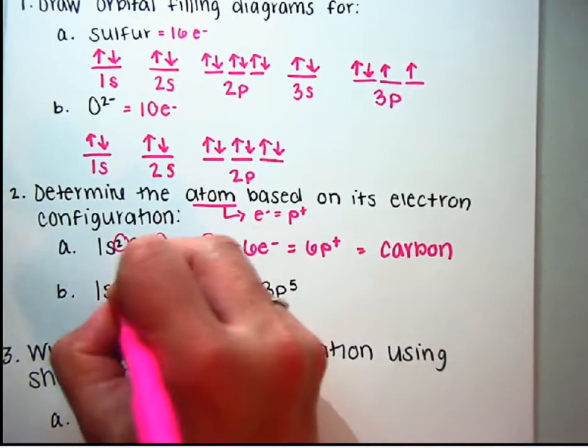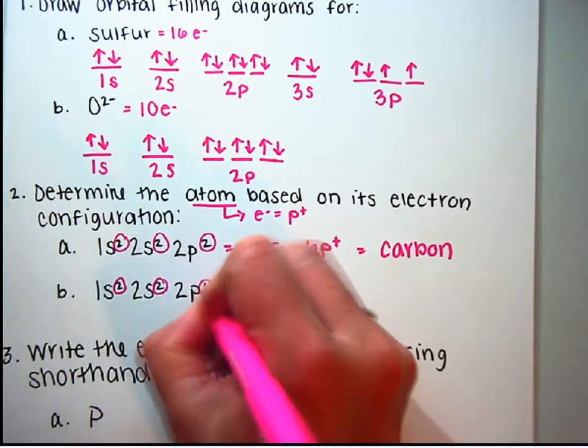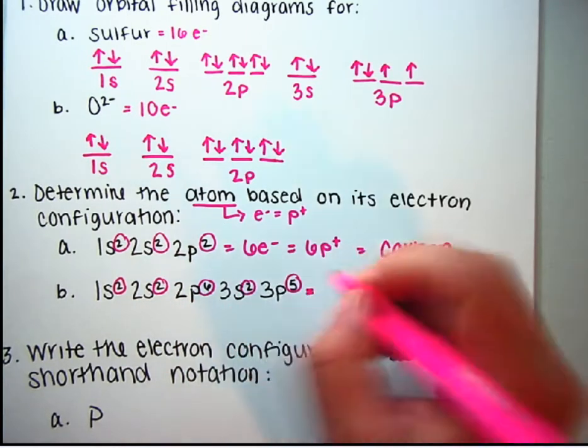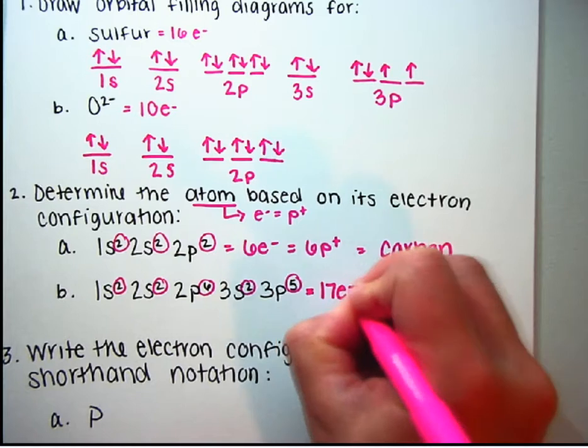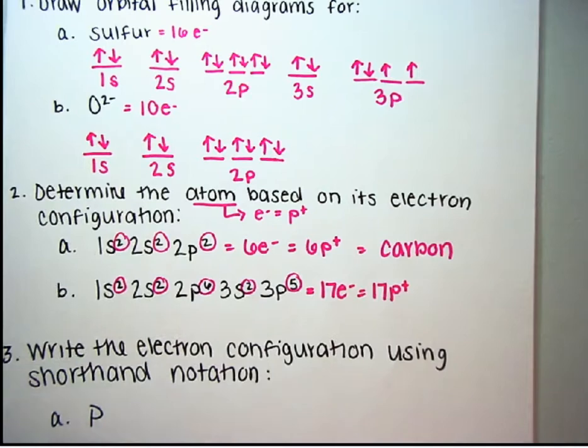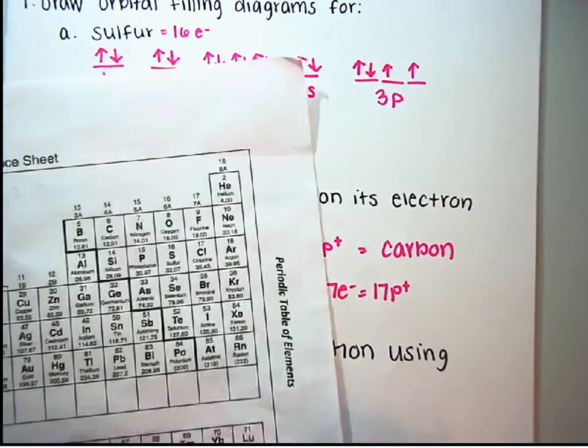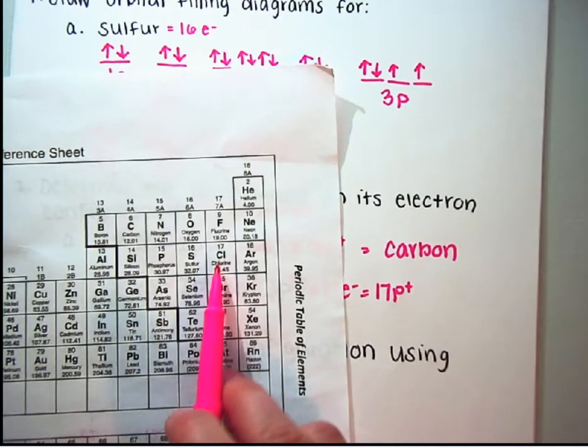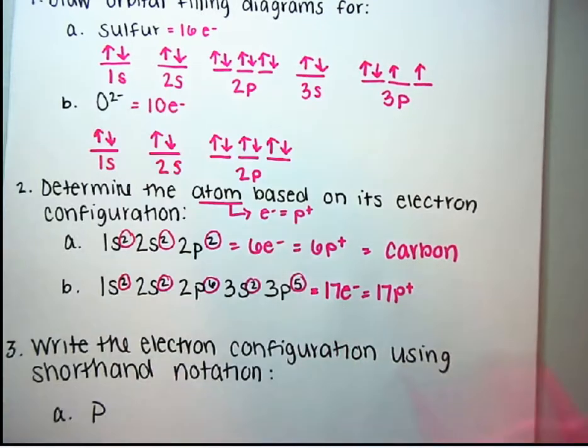2b. 2, 4, 6, 12, 17. And again, since this is an atom, if it has 17 electrons, it also has 17 protons. Protons are equal to the atomic number. Atomic number 17 is chlorine.